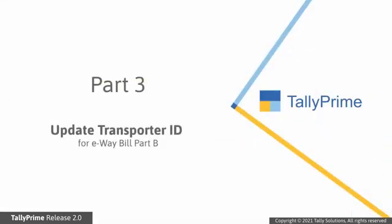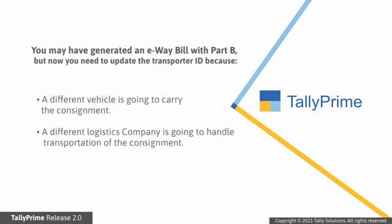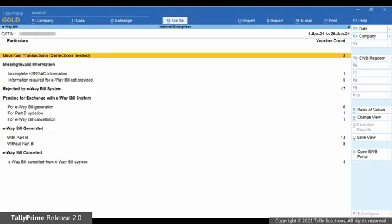Let's now take a look at the process of updating the transporter ID. You may have generated an e-way bill with Part B and now you want to update the transporter ID as another transporter is replacing the existing one. This situation arises when a different vehicle is going to carry the consignment or a different logistics company is going to handle transportation. In such cases, you will have to update the transporter ID.